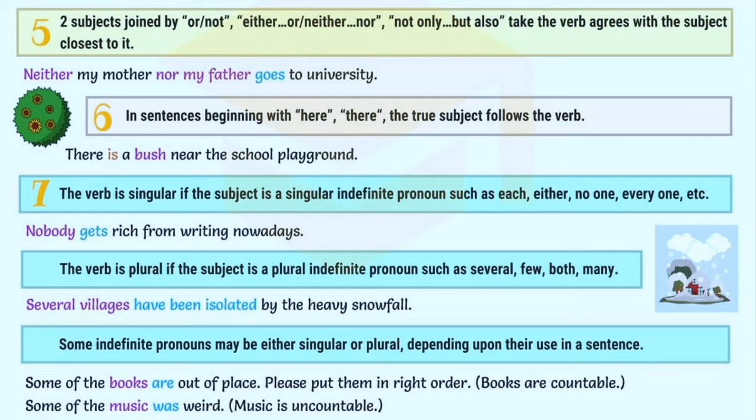The verb is plural if the subject is a plural indefinite pronoun such as several, few, both, or many. Some indefinite pronouns may be either singular or plural depending upon their use in a sentence. For example: 'Some of the books are out of place' — here books are countable. 'Some of the music was weird' — here music is uncountable.